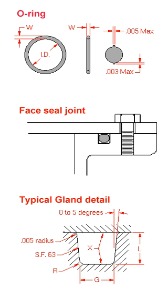Other seals for sealing: There are variations in cross-section design other than circular. The shape can have different profiles; an X-shaped profile, commonly called the X-ring, Q-ring, or by the trademarked name Quad-ring.